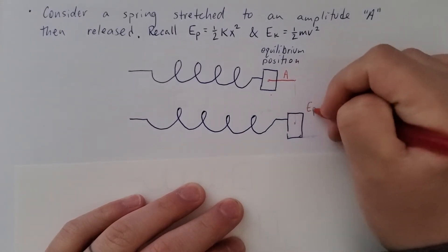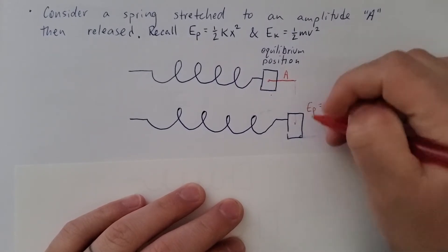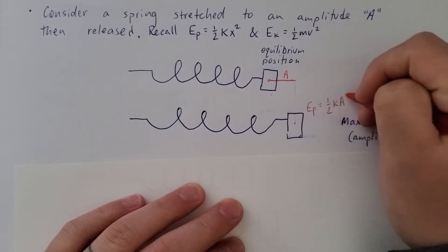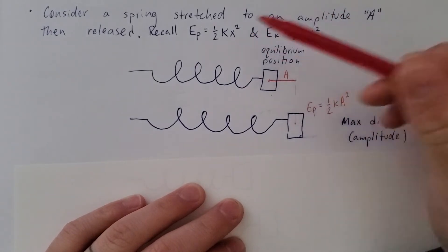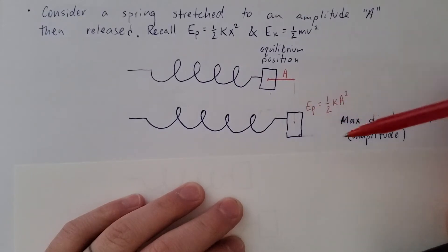The potential energy stored in this spring is one-half kx squared. But the total energy is going to be one-half kA squared. So when the displacement is equal to the amplitude, this will be the amount of potential energy here, which will be the maximum potential energy.